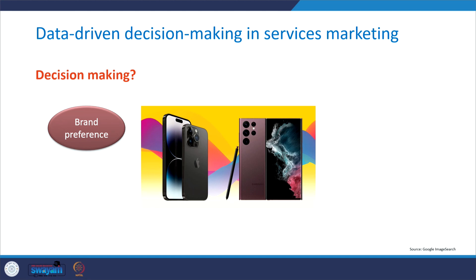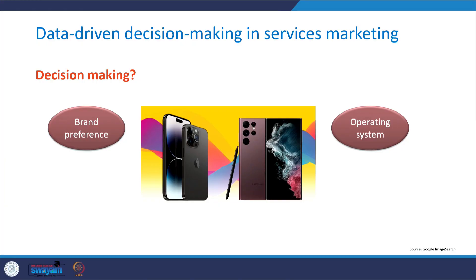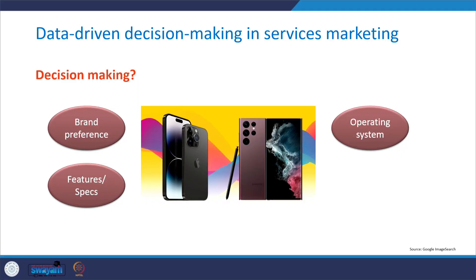So, on what basis do you make these decisions? Obviously, the first criteria is brand preference. Some customers may have a strong brand preference based on previous positive experiences, loyalty, or perception of each brand. The second parameter can be operating system. The iPhone runs on iOS while the Samsung Galaxy uses Android, and the customer may have a preference for one operating system over the other. The third decision-making parameter can be features or specifications: the customer evaluates specific features such as camera quality, battery life, processing power, and storage capacity offered by each phone.